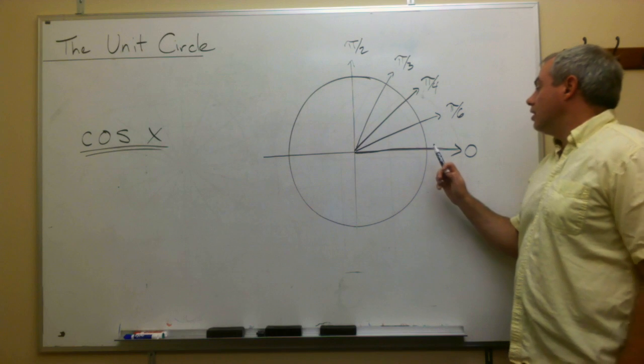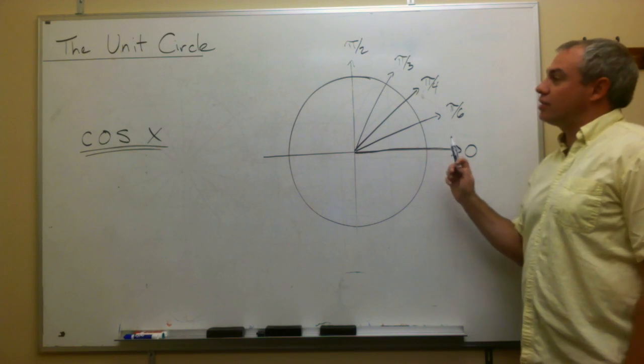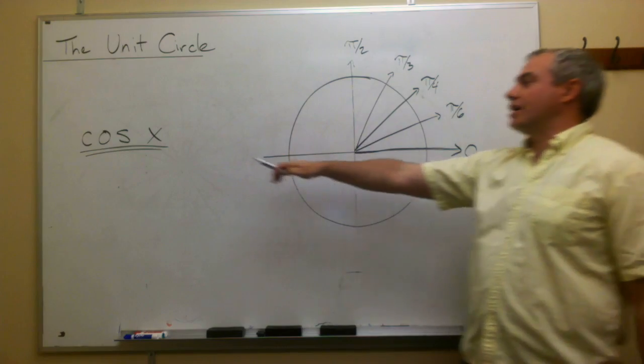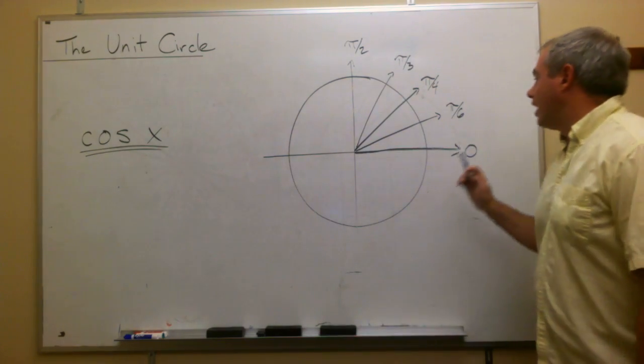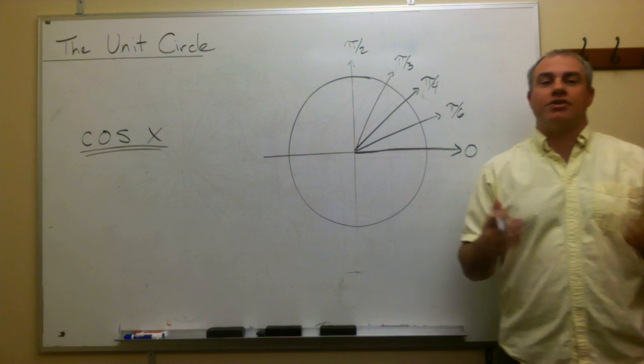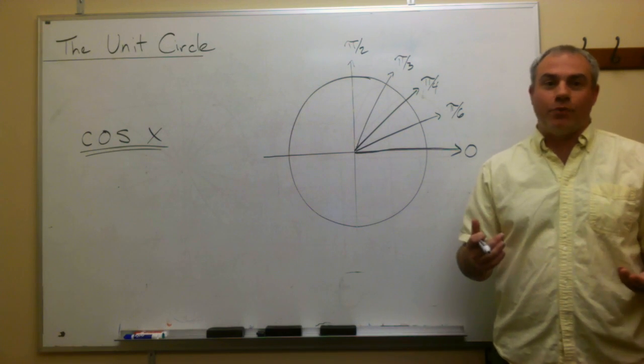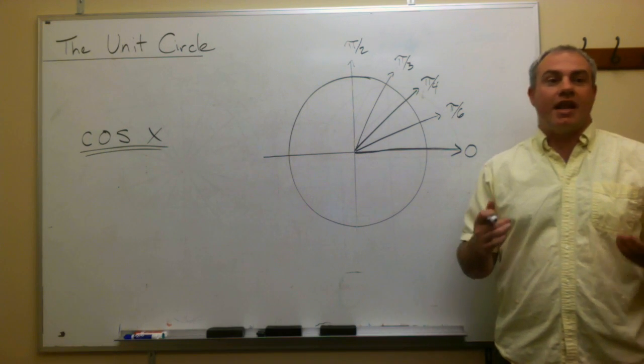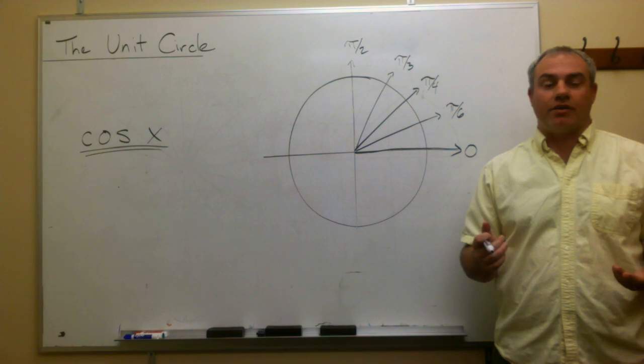So now we can start talking about, well, what's the cosine of these angles? What is the cosine of zero? And really cosine is just a fancy math way of saying what's the x value of that angle?